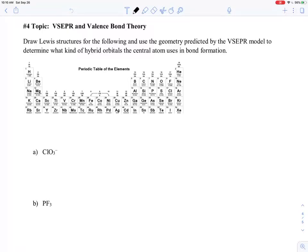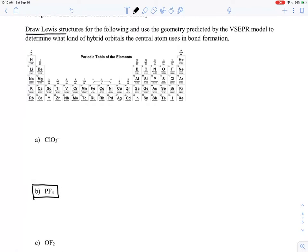Okay, so topic number four, VSEPR and valence bond theory, and we are talking about now number two, B, PF4. So they wanted to talk about the Lewis structures and also what kind of hybrid orbital is out there for the central atom.